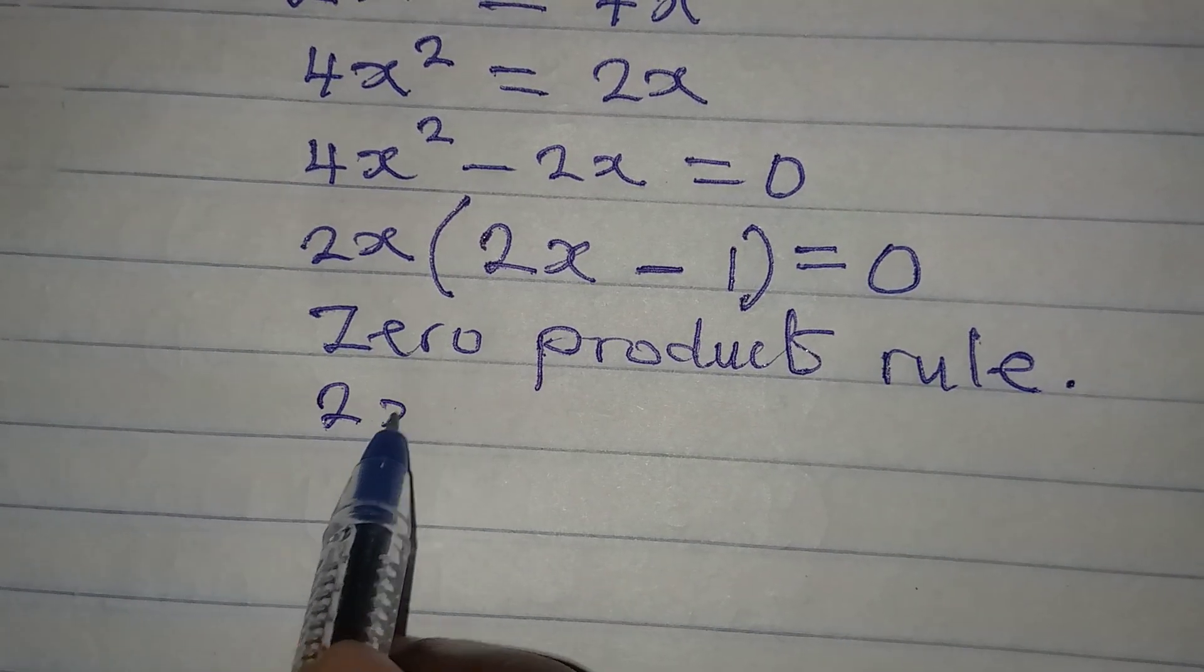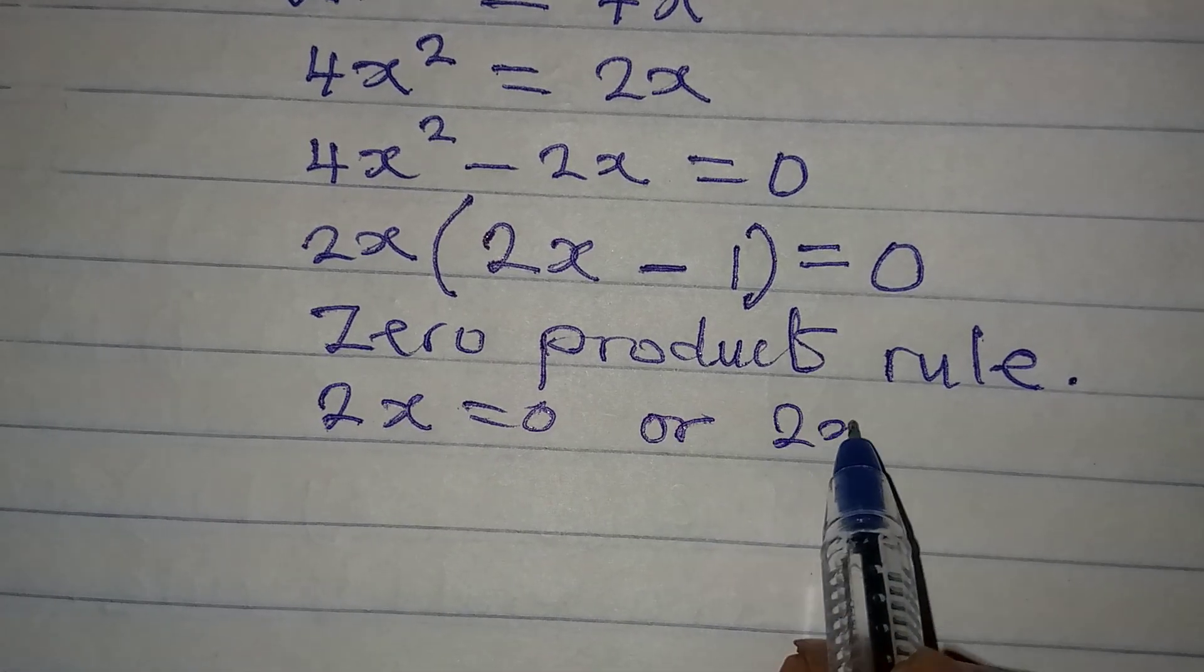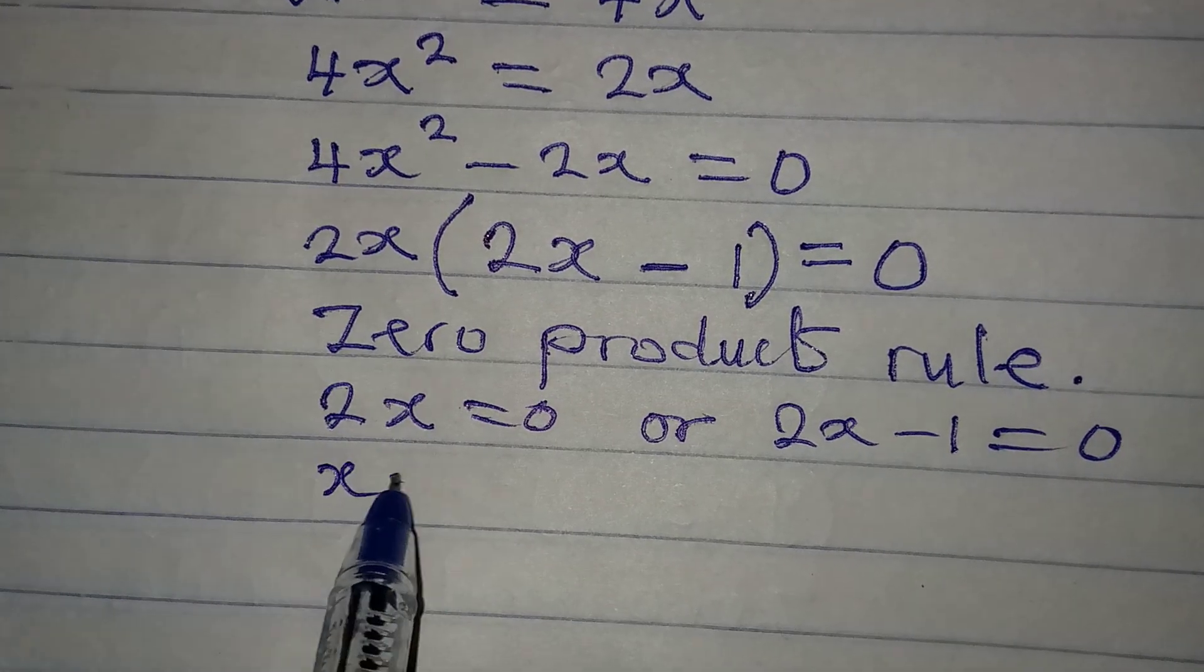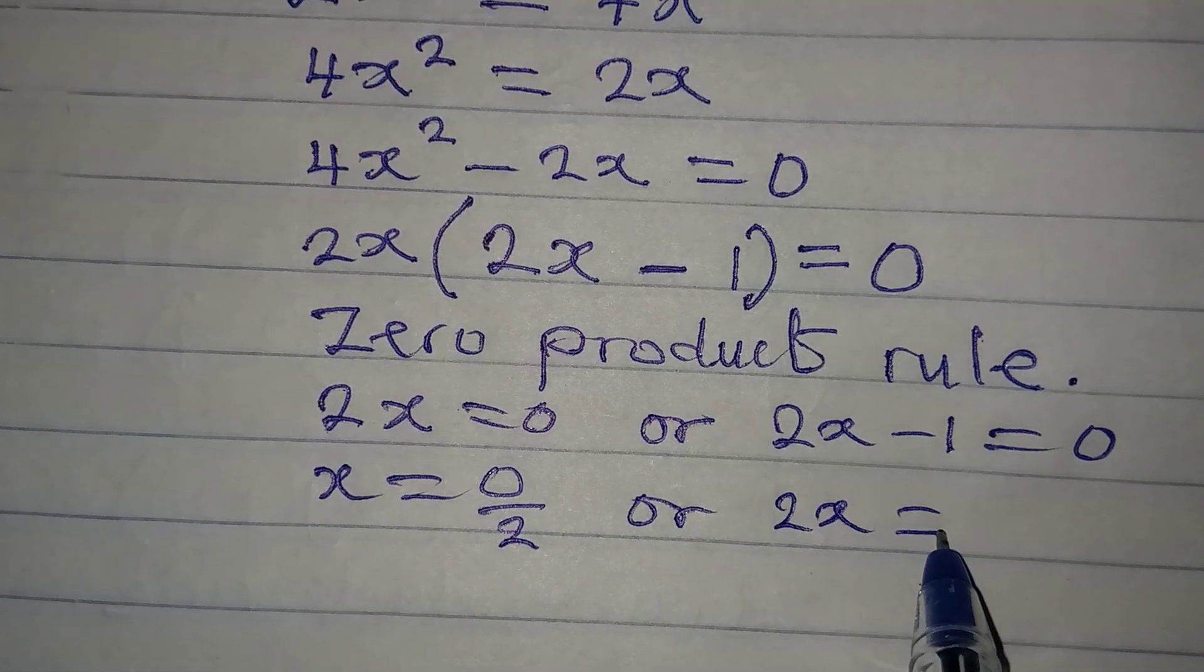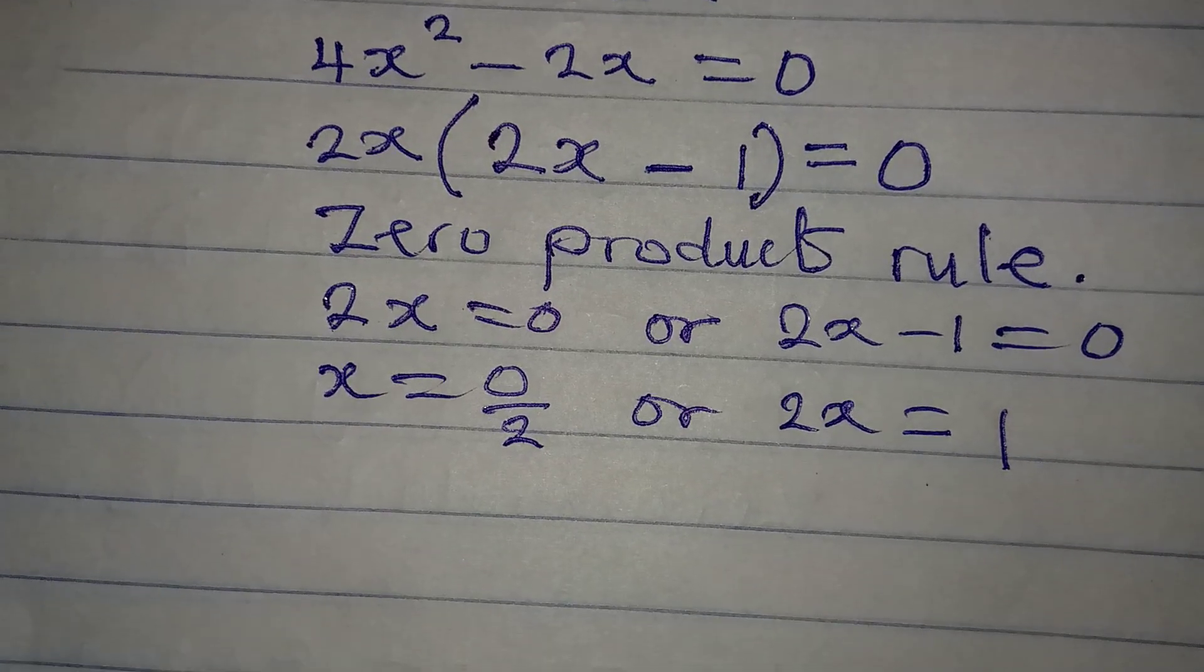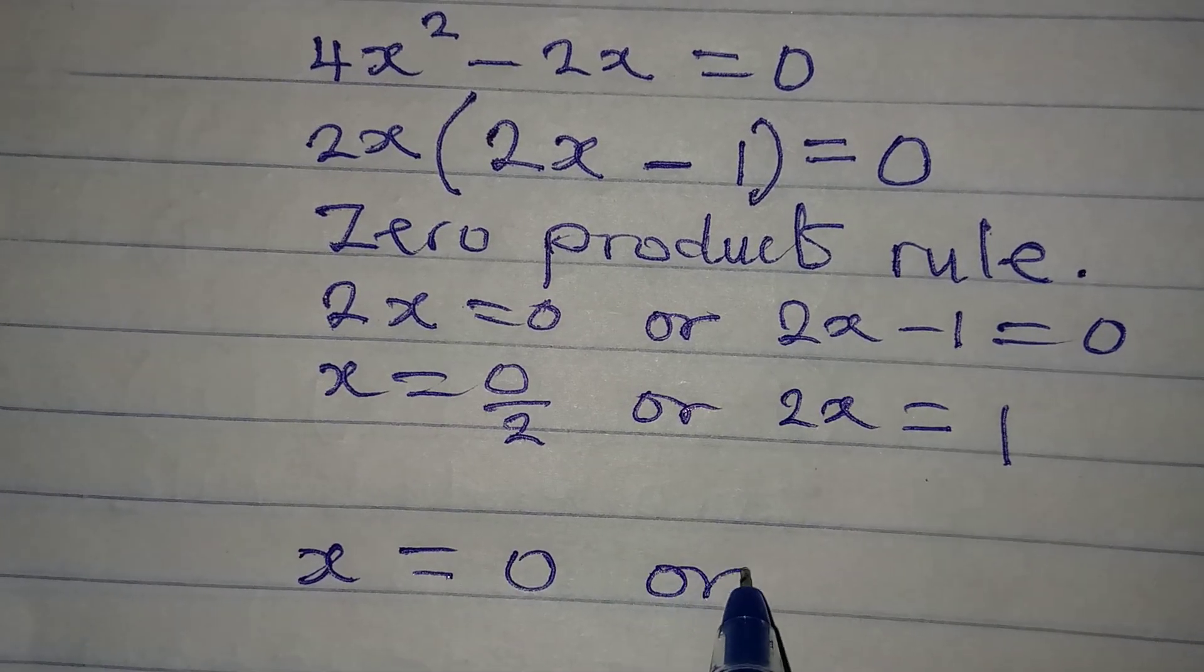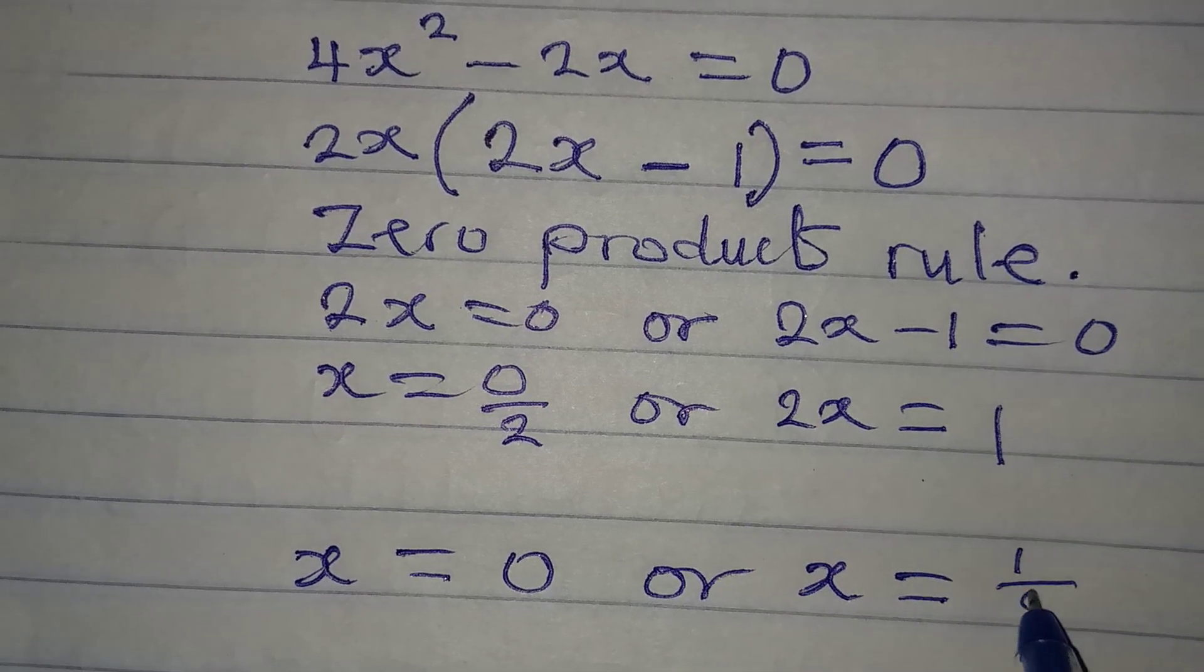So we are going to say that it is either 2x is equal to 0, or 2x minus 1 is equal to 0. If we continue, x will be 0 over 2, or 2x will be equal to 1. Can we really divide 0 by 2? The answer is yes. 0 divided by 2 will give 0, or on this side, x will be equal to 1 divided by 2.